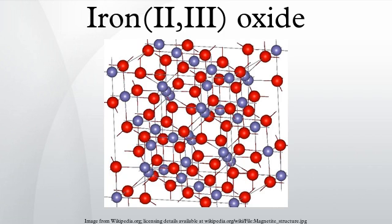It contains both Fe2+ and Fe3+ ions and is sometimes formulated as FeO·Fe2O3. This iron oxide is encountered in the laboratory as a black powder. It exhibits permanent magnetism and is ferromagnetic, but is sometimes incorrectly described as ferromagnetic.